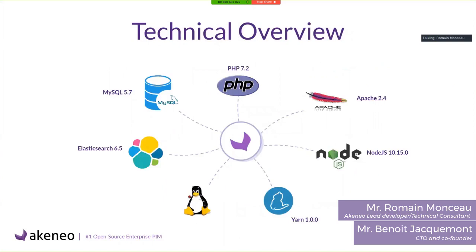About our technical stack: we work with a LAMP stack — Linux, Apache, MySQL and PHP. Our PHP stack is also based on the Symfony framework version 3.4. For the front-end, we have Node.js and Yarn. And we also use Elasticsearch for indexing the products.